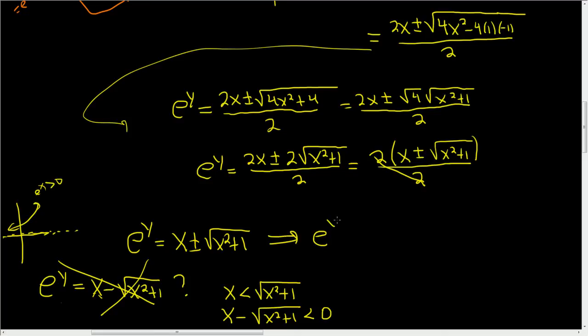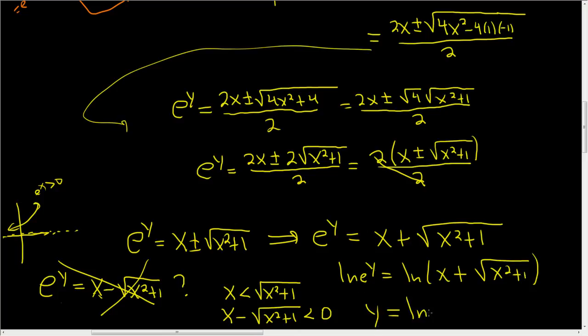So that means that e^y is equal to x plus the square root of x^2 plus one. Taking the natural log of both sides or just rewriting it in logarithmic form. I'll take the natural log so you see it. So this is x plus that. And then use an identity. ln of e^y is y. So here we get y is the natural log of x plus the square root of x^2 plus one.